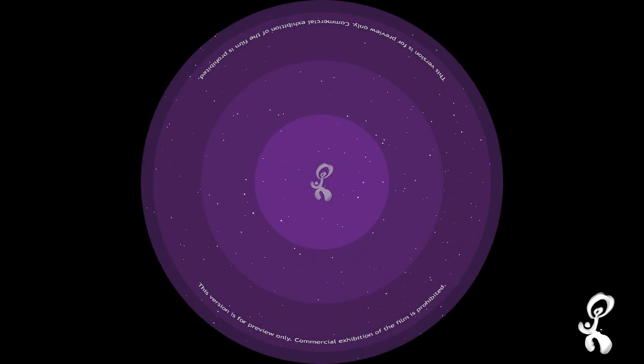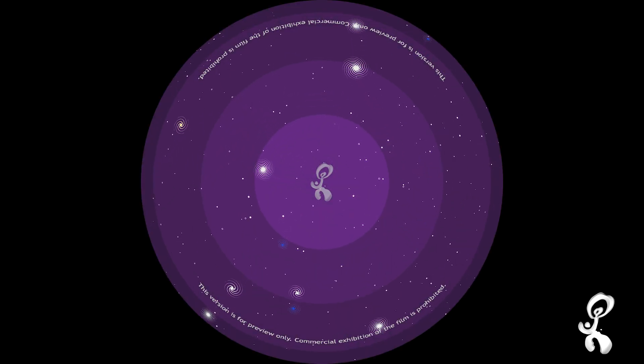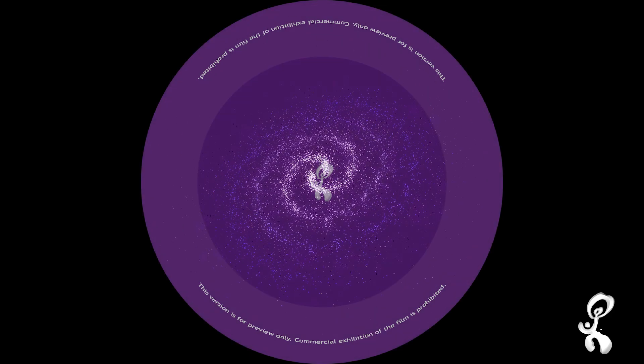Space is huge, filled with lots of stars and galaxies. One of them is the Milky Way. In its sidearm spins our sun, which is 4.6 billion years old.